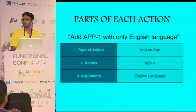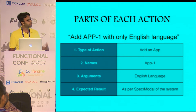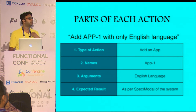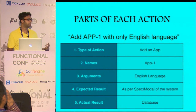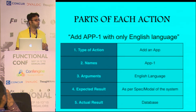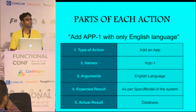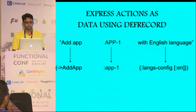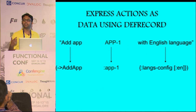Then there is a certain expected result as per my spec, as per my understanding, as per my model. And there is an actual result which comes from the database, which comes from the state. So there are five parts — two in each action — that need to be understood. What if we could express this action in terms of data?